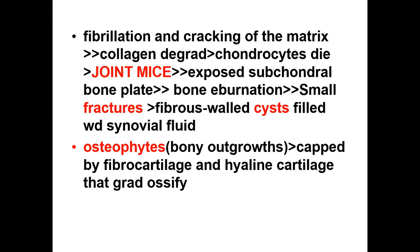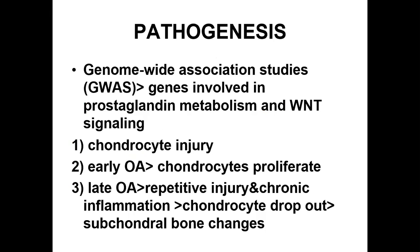The exposed subchondral bone plate becomes the new articular cartilage. Friction with the opposing surface burnishes the exposed bone, giving it the appearance of polished ivory — this is called bone eburnation. There may also be small fractures or fibrous wall cysts filled with synovial fluid. Along with this, there may be bony outgrowths called osteophytes, capped by fibrocartilage and hyaline cartilage, which gradually ossify. So joint mice or loose bodies, fibrous wall cysts, eburnated bone, and osteophytes are the morphologic features of osteoarthritis.